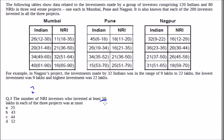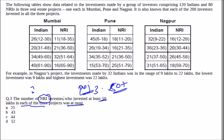Question 3: the number of NRI investors who invested at least 50 lakhs in each of the three projects — find the maximum. For NRIs investing 50 or higher in Mumbai: 32 are guaranteed above 50, plus 20 more can be pushed to 50, giving 68 people in Mumbai. In Pune, one person at the lower end, remaining 20 pushed to 50, plus 25 from the higher band — giving 45 people in Pune.